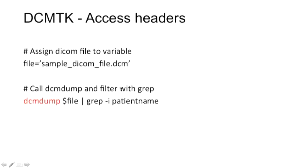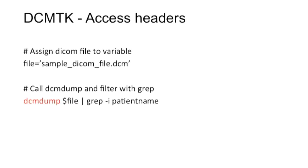These headers contain vital information required for quality checks and other purposes. These small command-line tools can be scripted or used in programming, making our delivery easy. Simple commands that can help you access those headers over SSH — very handy when dealing with emergencies on remote servers.